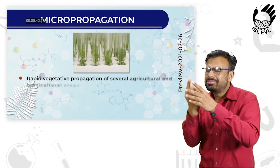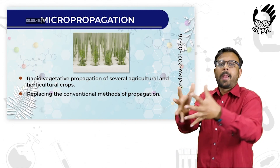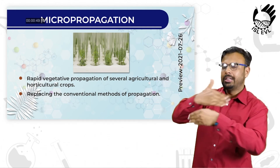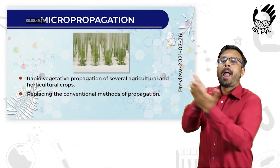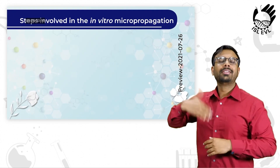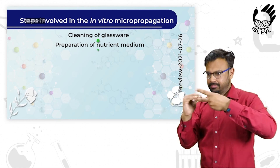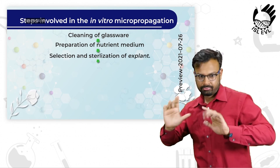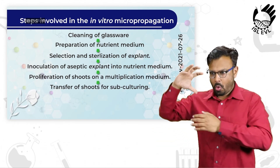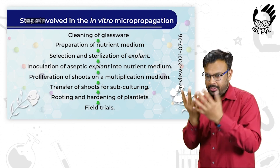Micropropagation is the rapid vegetative propagation of several agricultural and horticultural crops, replacing conventional methods of propagation. Steps involved in in vitro micropropagation include: cleaning of glassware, preparation of nutrient medium, selection and sterilization of explant, inoculation of aseptic explant in nutrient medium, and transfer of shoots for subculturing.